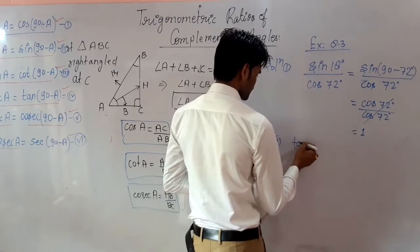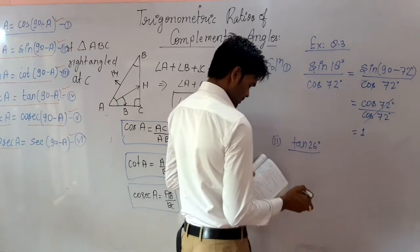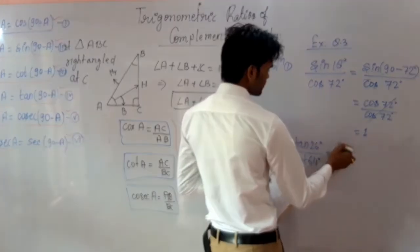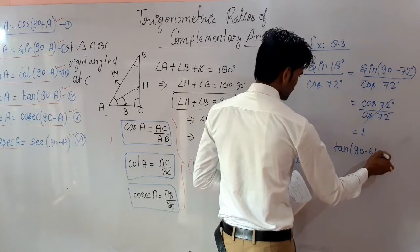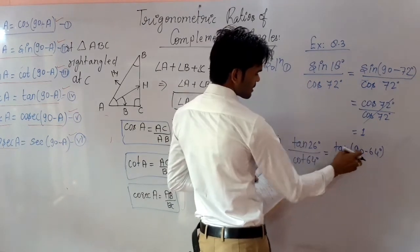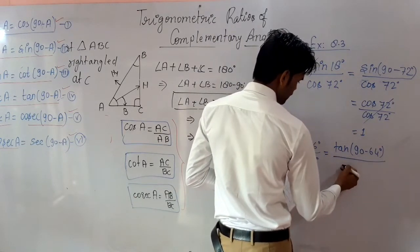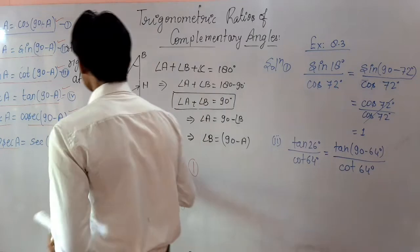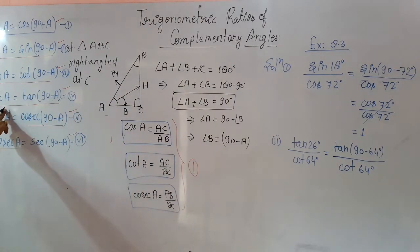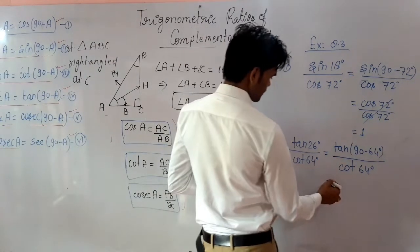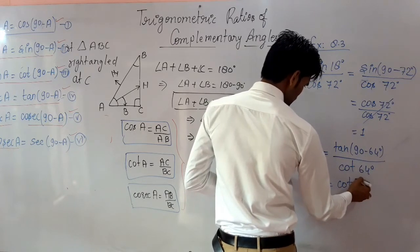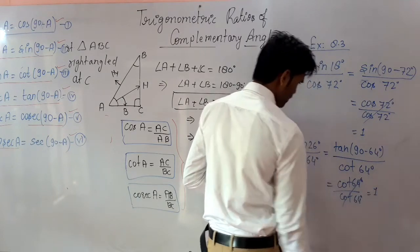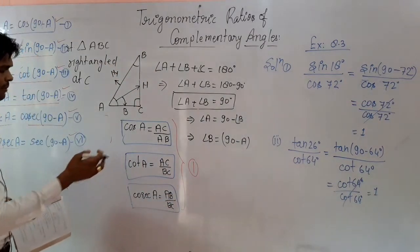Part two: tan26° / cot64°. We write tan26° as tan(90°−64°). Using the formula tan(90°−A) = cotA, this becomes cot64° / cot64° = 1.